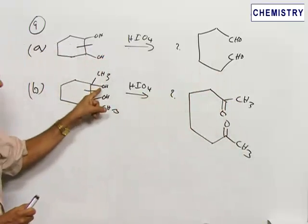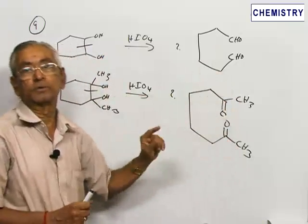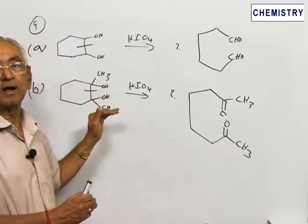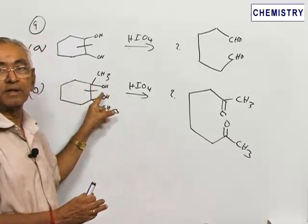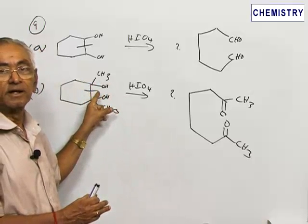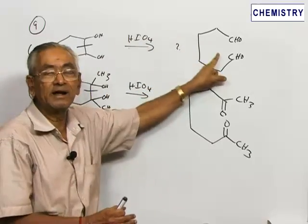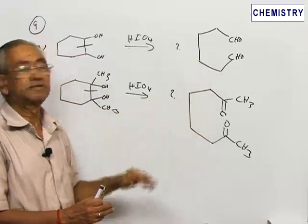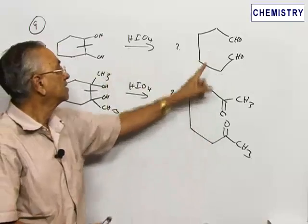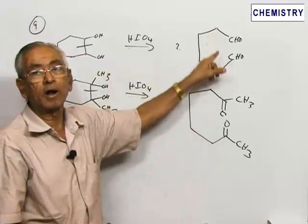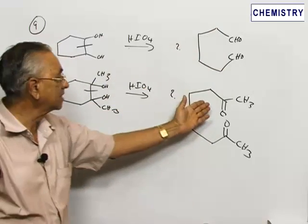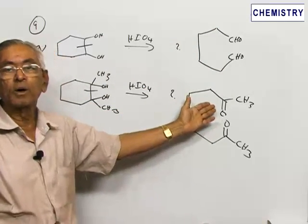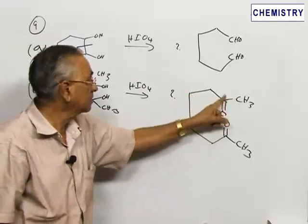Because of substitution, we get a diketone. This is again oxidative cleavage of 1,2-diols, but when there is substitution on the carbon atom bearing the hydroxy group, it will not lead to an aldehyde but will give rise to a ketone. These compounds are very important—they will undergo intramolecular aldol condensation and other reactions. This is actually a methyl ketone, which can undergo an iodoform reaction.